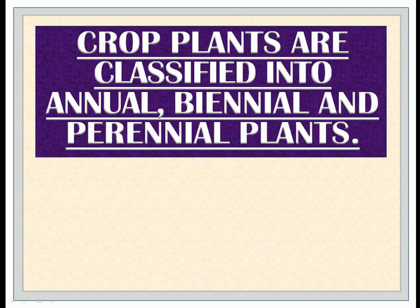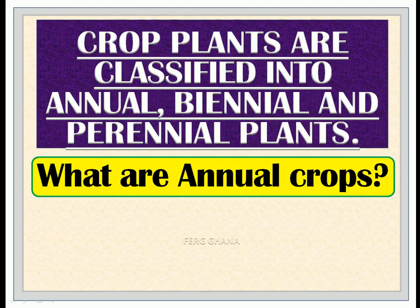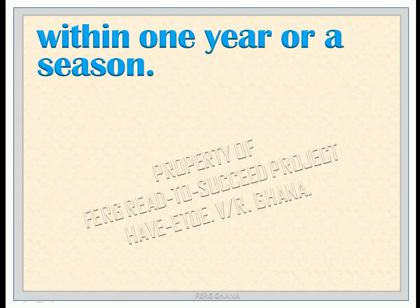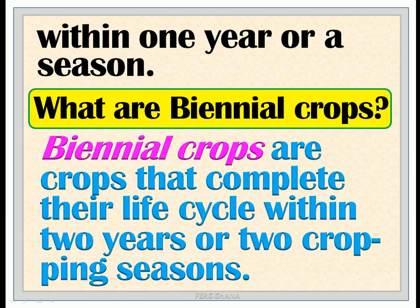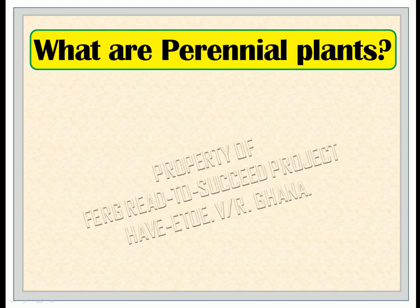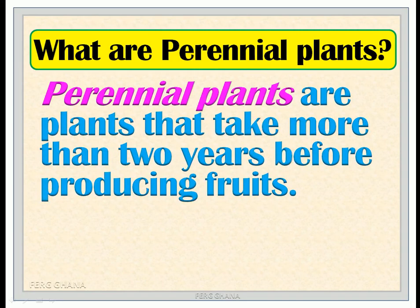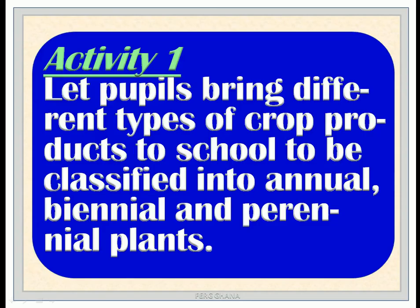Crop plants are classified into annual, biennial, and perennial plants. Annual crops are crops that complete their life cycle within one year or a season. Biennial crops are crops that complete their life cycle within two years or two cropping seasons. Perennial plants are plants that take more than two years before producing fruits. Activity 1: Let pupils bring different types of crop products to school, to be classified into annual, biennial and perennial plants.